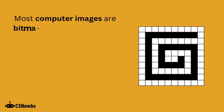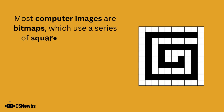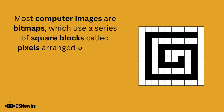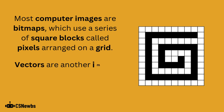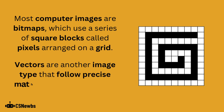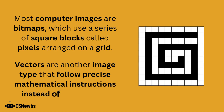Most computer images are bitmaps, which use a series of square blocks called pixels arranged on a grid. Vectors are another image type that follow precise mathematical instructions instead of using pixels, but you do not need to know about vectors for the exam.